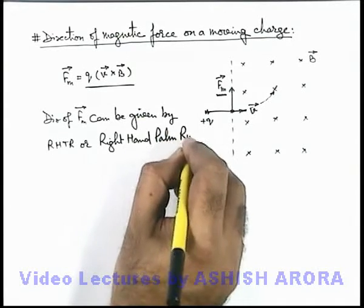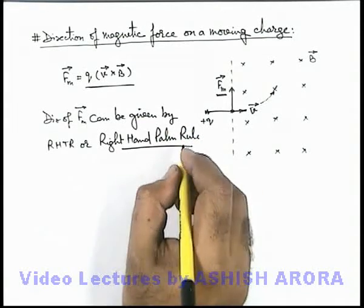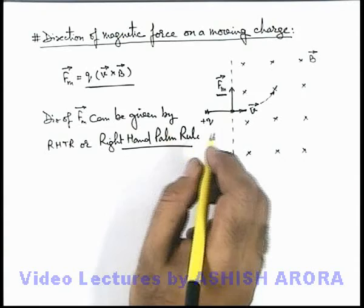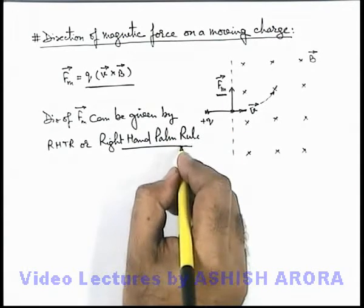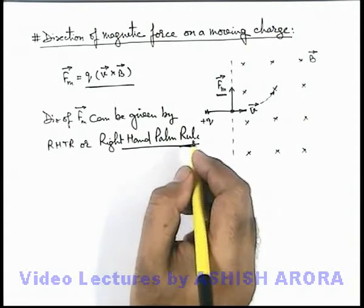Which I am going to explain now. This right-hand-palm-rule is another rule which we use here that will be more comfortable to analyze the direction of magnetic force.